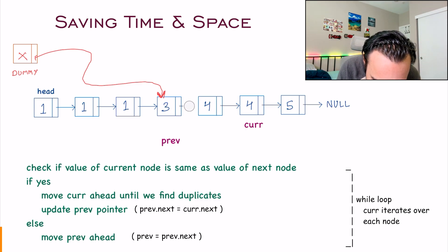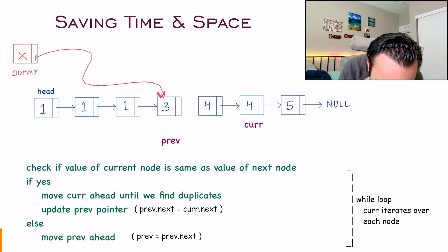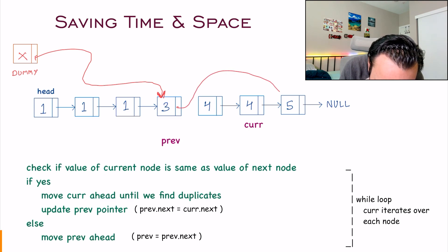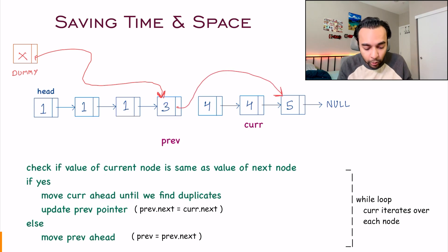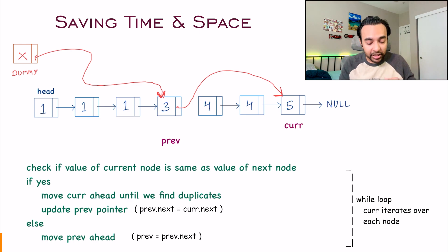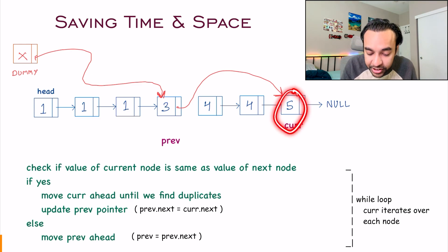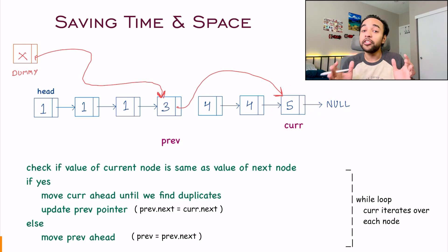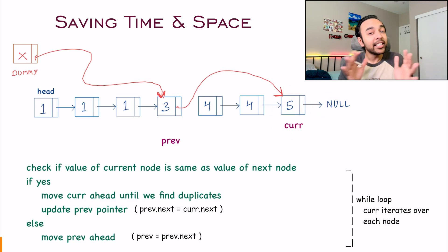So previous.next is going to get updated and it will point to current.next. Current will now move ahead. And you will once again check: is the current value the same as the next value? You have reached null, and that is where you stop.